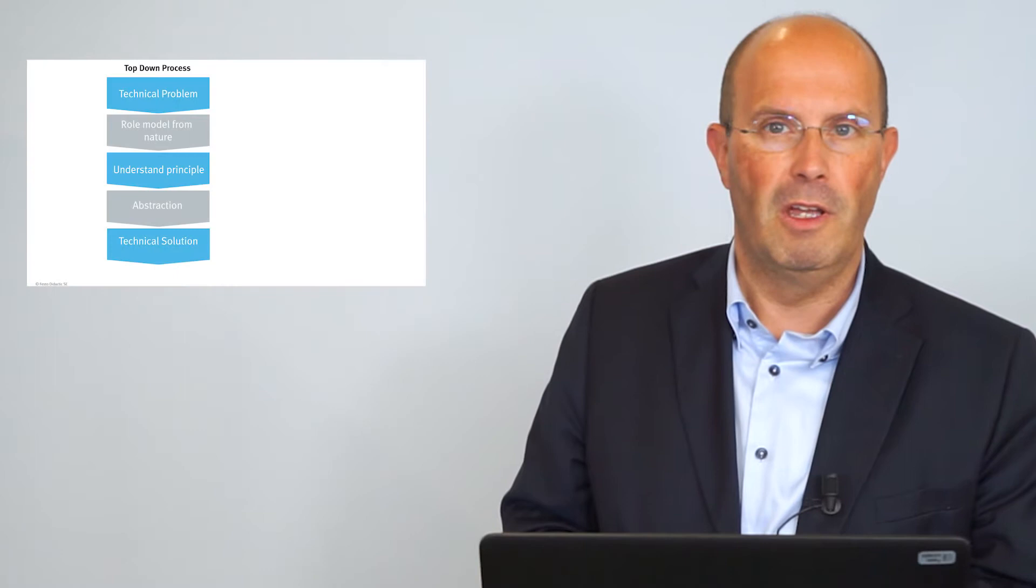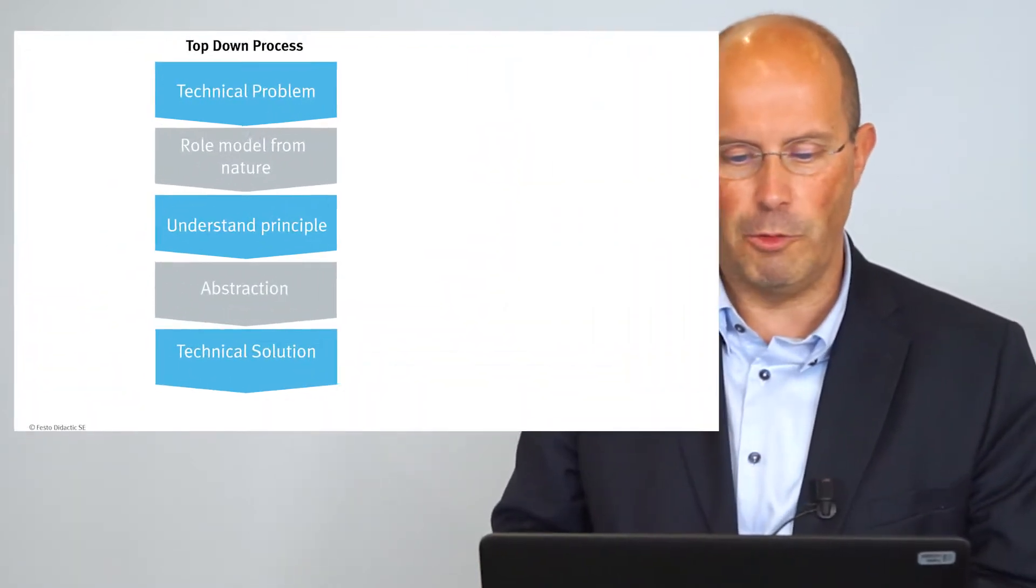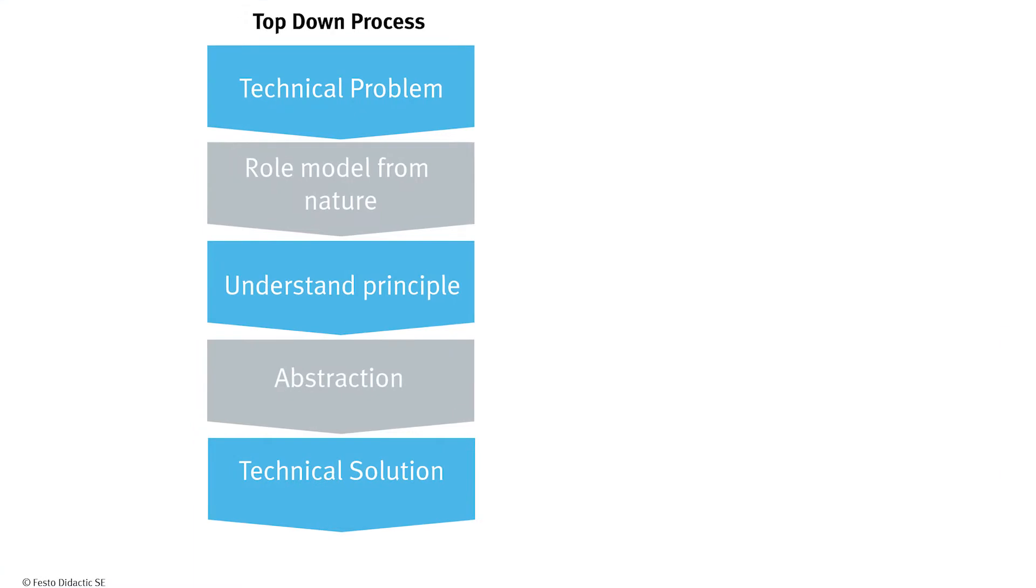This is a very good example for catching ideas from biology and making a technical product out of it. Here we have two principles. The first principle is the so-called top-down process. You have a technical problem and then you search into nature for possible solutions. Then you have to understand the principle you find there, make an abstraction of it, and then create based on this abstraction a technical solution for your problem.